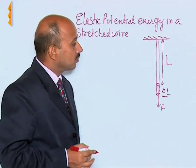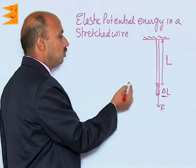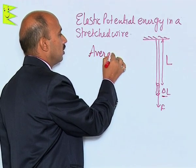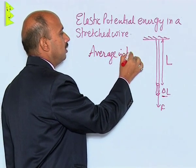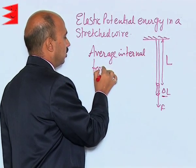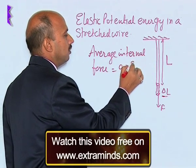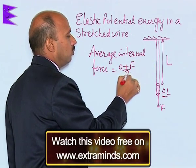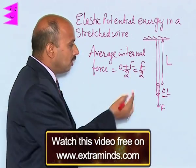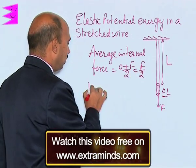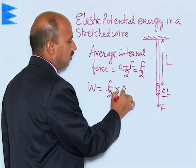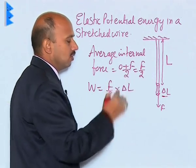So the average internal force is equal to (0 + F) / 2, that is F upon 2. Then work done on the wire is equal to F/2 into delta L, the increase in the length.